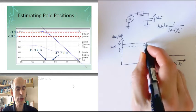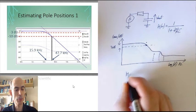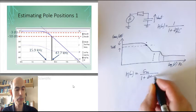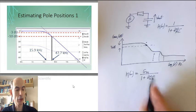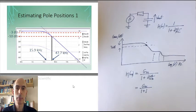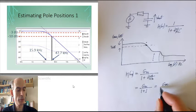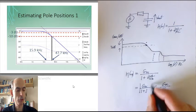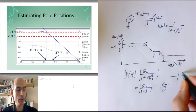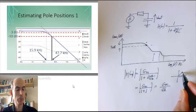If you're at the break frequency, then the response of the network is going to be the gain at low frequencies divided by 1 plus j omega divided by omega_b. At the break frequency, omega equals omega_b, so we get G_DC over 1 plus j. The amplitude of this complex expression is G_DC over the square root of 2, because 1 plus j on an Argand diagram has real part 1, imaginary part 1, and amplitude square root of 2.